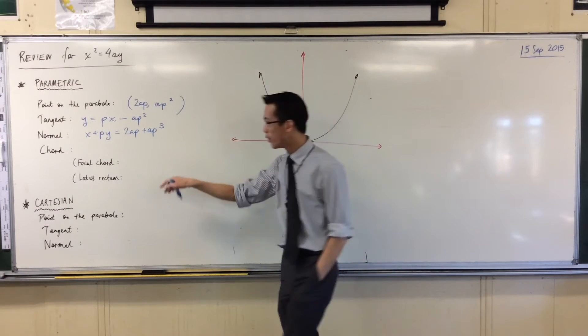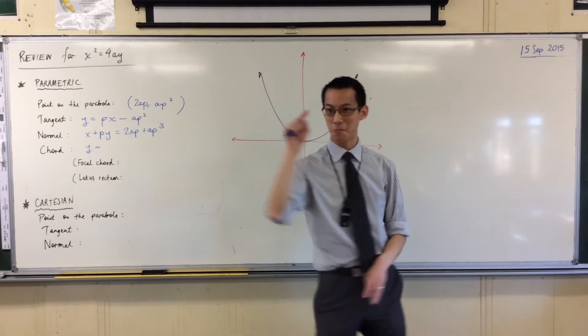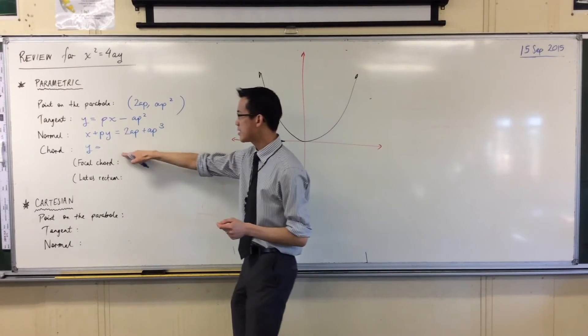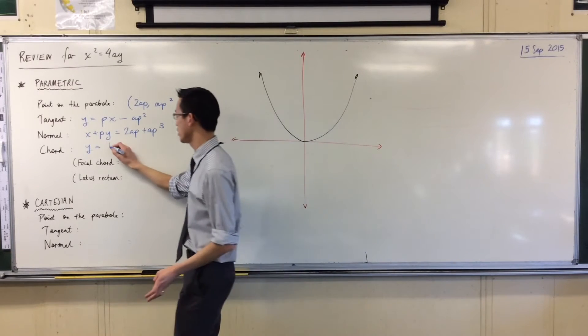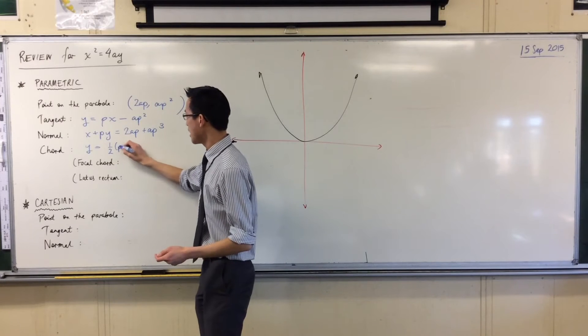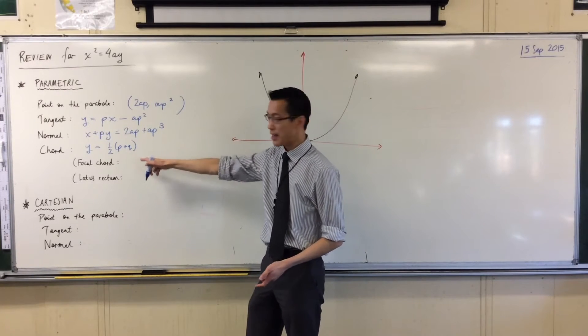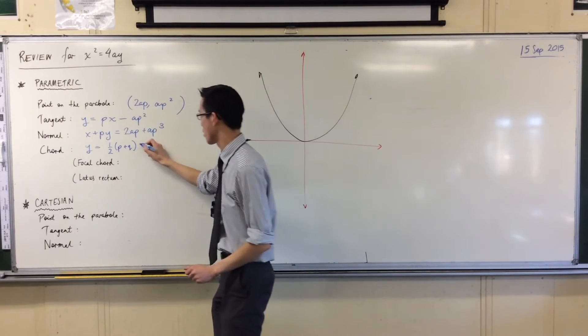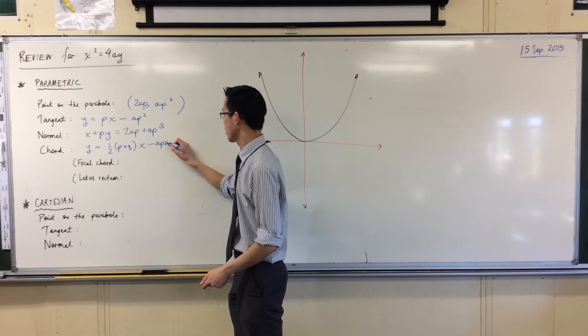All right, let's go to the chord. Now, you remember, the chord is what happens to the tangent when it doesn't intersect at one spot, when it intersects at a pair. So that's why this equation and this equation are so very similar to each other. I'll give you a clue, it starts with a half. Half p plus q, very good, it's the average, the gradient is the average of the gradients at the two tangents on your endpoints, minus apq.